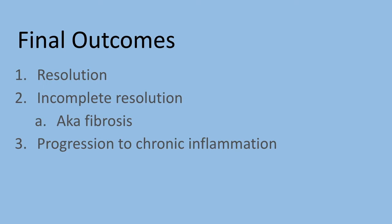Progression to chronic inflammation occurs when the acute inflammatory stimulus cannot be resolved, either as a result of the persistence of the inflammatory agent, or if there is some interference with the normal process of healing.